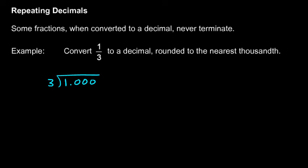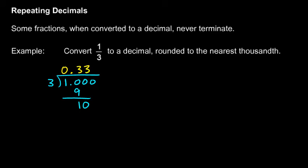3 goes into 1 zero times, so we need a decimal there. 3 will go into 10 three times. We multiply: 3 times 3 is 9. We put the result down here, subtract, and get 1. Then we bring down this 0 and get 10. How many times does 3 go into 10? It goes in 3 times, so we put a 3 up here. 3 times 3 is 9. We put the result down, subtract — 10 minus 9 is 1.